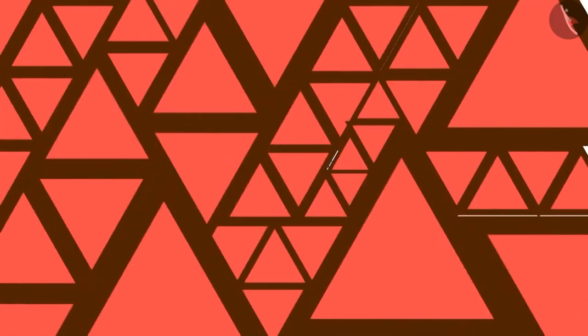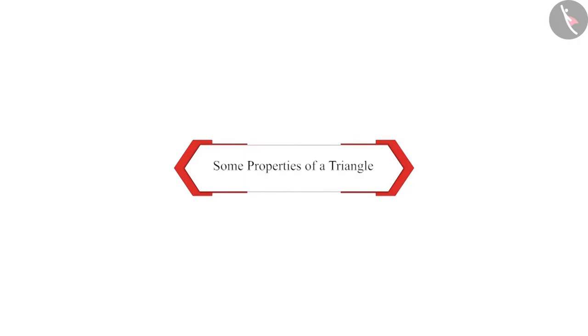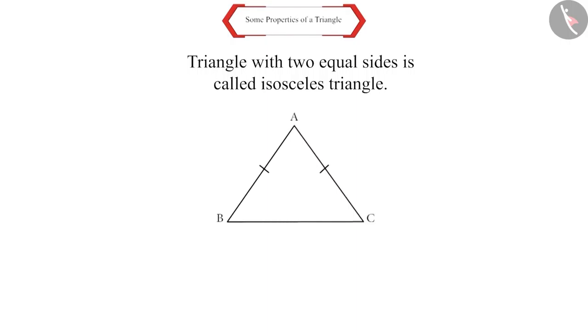Especially those triangles that have two equal sides. Friends, in the previous session, we have learned that a triangle with two equal sides is called an isosceles triangle.